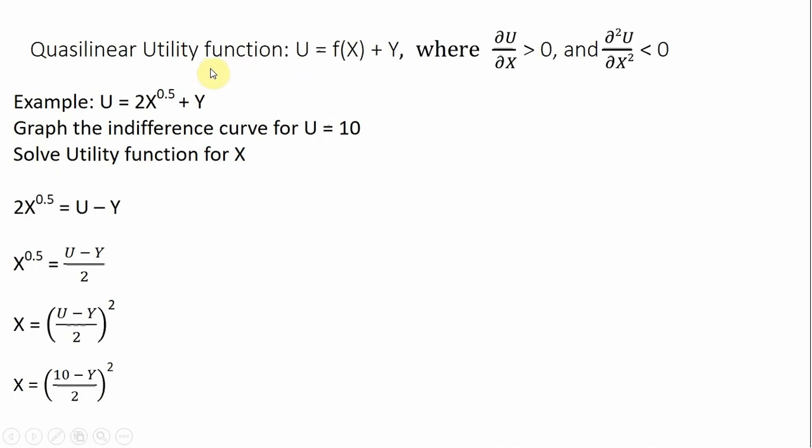A quasi-linear utility function takes on this form right here, where the partial derivative of utility with respect to good x is positive, and good x displays diminishing marginal utility. The second partial derivative of utility function with respect to good x is negative.